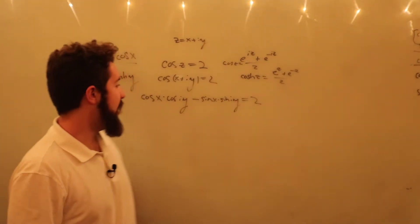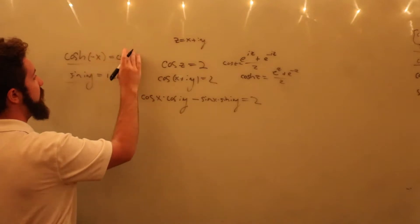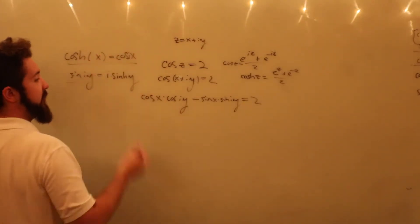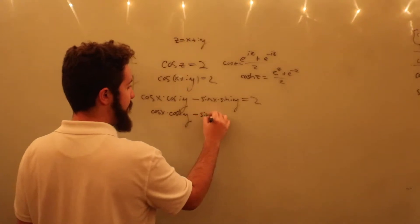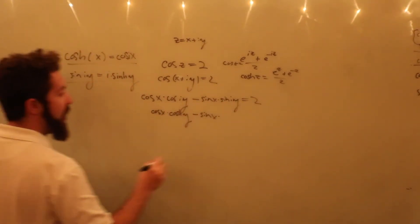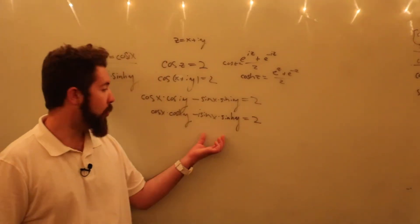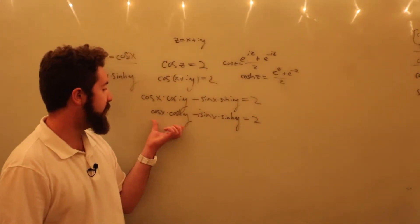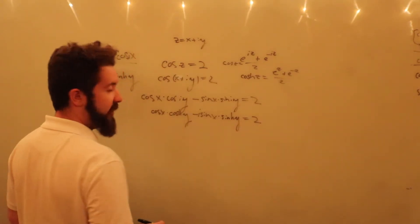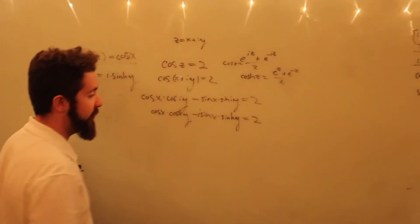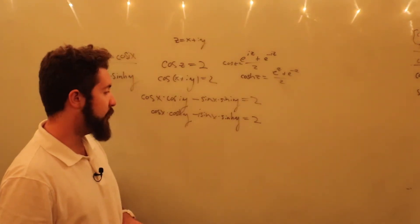We're going to use these identities, because now we can substitute cosine of iy — plugging i in for x — and you get cosh of y, since cosh is an even function. So: cosine(x)·cosh(y) minus sine(x)·i·sinh(y) equals 2. What you'll notice is that this is a complex number with real part cosine(x)·cosh(y) and imaginary part negative sine(x)·sinh(y). Since the right-hand side is purely real, the imaginary part has to be zero.